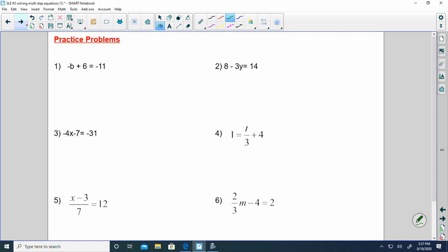Let's go ahead and do these. I'm going to subtract 6 from both sides. So I get negative b. Those cancel out. Negative 11 minus 6 is negative 17. Multiply both sides times negative 1. That's going to give me b equals positive 17.